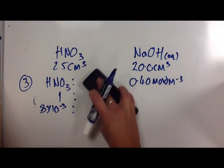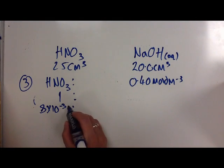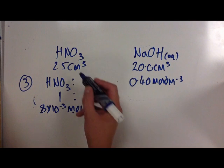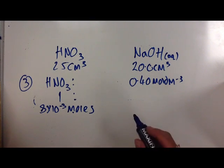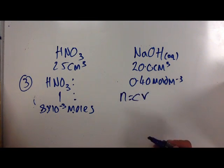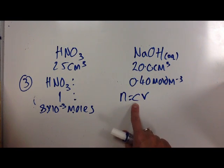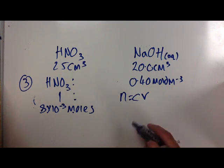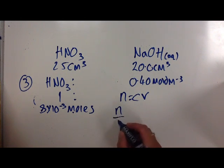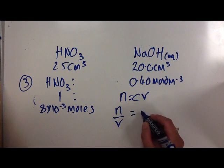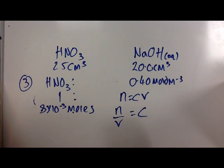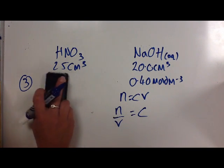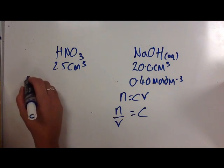I want to find the concentration. I know the number of moles, and I know my volume. So, I can go back to my N equals CV. But I need to rearrange that equation to get the concentration on their own. So, if volume is a multiple on this side, I make it a fraction on this side. N over V equals C. I can now do my final stage, part four, of my calculation.